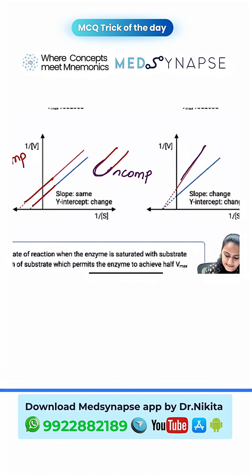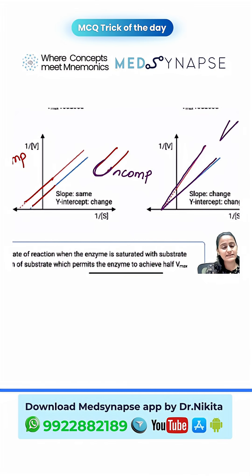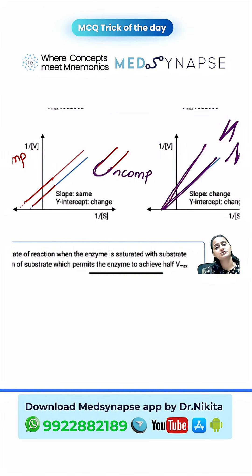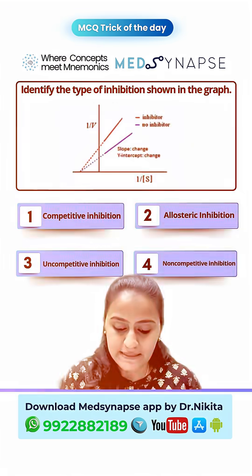If the two lines are forming a V shape — a straight V and an inverted V together — they basically form an N shape. So remember, V is non-competitive inhibition. These are the tricks which actually become your savior in the exam.